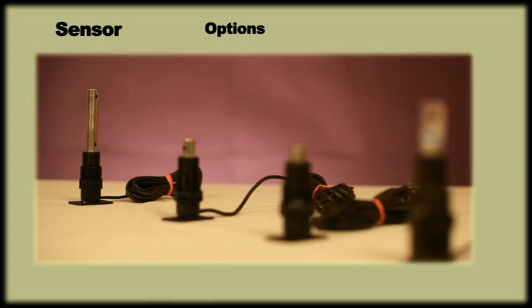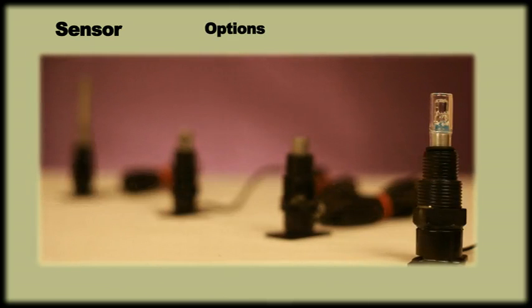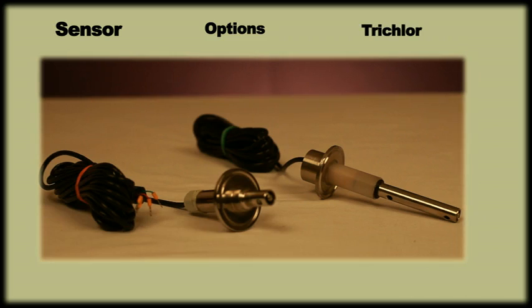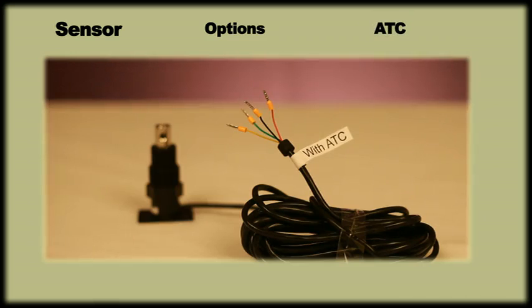It is available with three different cell constants to suit various ranges of conductivity ranging from 0 to 1 lakh. Each of these sensors are also optionally available with triclamp fitting and automatic temperature compensation.